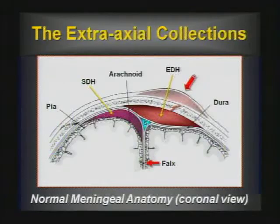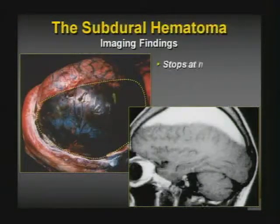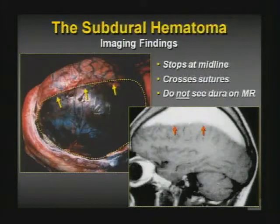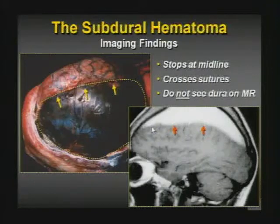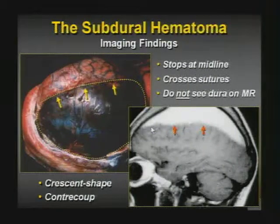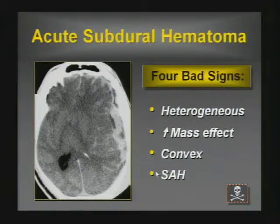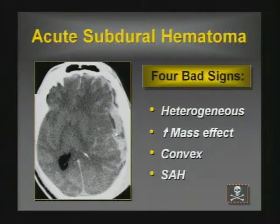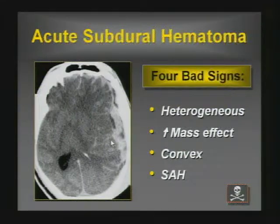The characteristic findings of a subdural hematoma: it stops at the midline because it can't go past the falx. It crosses the sutures. You do not see the dura because it's beneath the dura. This holohemispheric collection of methemoglobin is abutting the surface of the brain parenchyma — there's no black line as there would be in the epidural space. It's frequently crescent-shaped, and the vast majority are in the contrecoup site. When it's heterogeneous, it's particularly concerning — it may mean active bleeding, or re-bleeding into a pre-existing chronic subdural. Disproportionate mass effect, convex shape, and associated subarachnoid hemorrhage are findings that portend a worse prognosis.